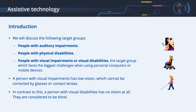People with auditory impairments. People with physical disabilities. People with visual impairments or visual disabilities — the target group which faces the biggest challenges when using personal computers or mobile devices. A person with visual impairments has low vision which cannot be corrected by glasses or contact lenses. There are many different types of visual impairments. In contrast, a person with visual disabilities has no vision at all — they are considered to be blind. For every target group, there are hardware and software solutions.